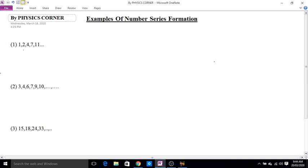Let's see the first example: 1, 2, 4, 7, and 11. We will use the pyramid method. So let's see 1, 2, 4, 7, and 11. Taking successive differences: 2 minus 1 equals 1, 4 minus 2 equals 2, 7 minus 4 equals 3, and 11 minus 7 equals 4.